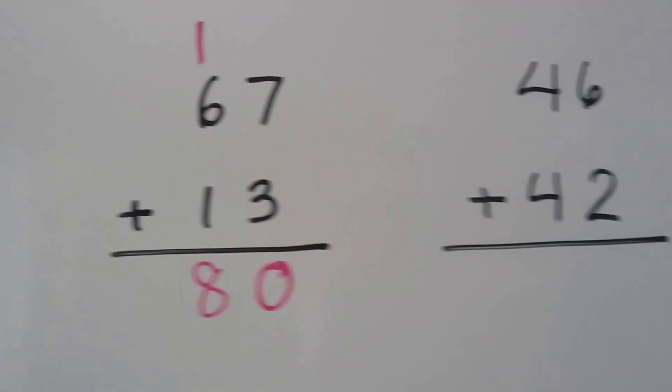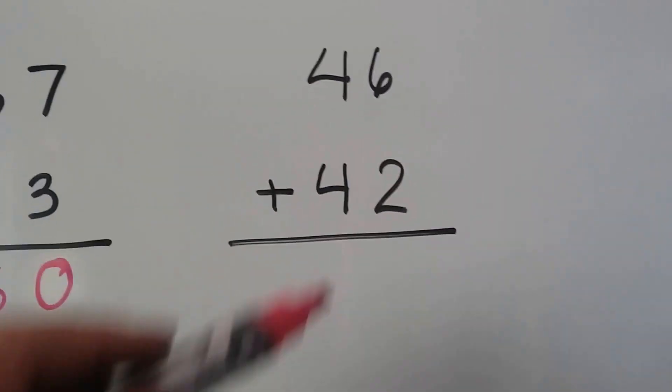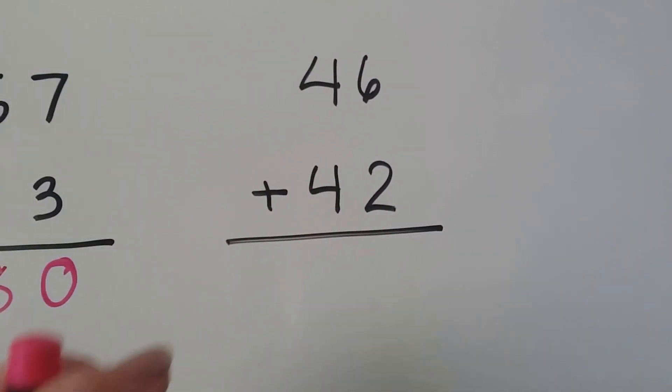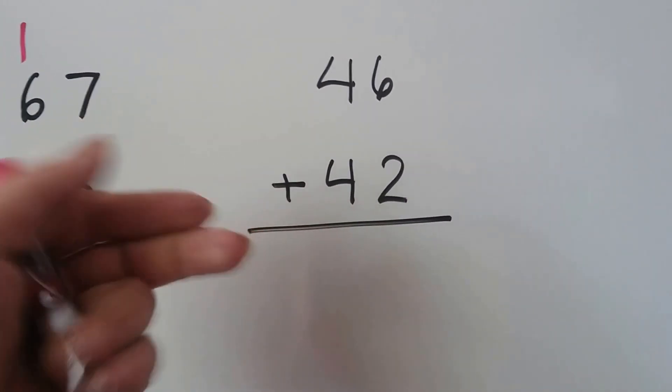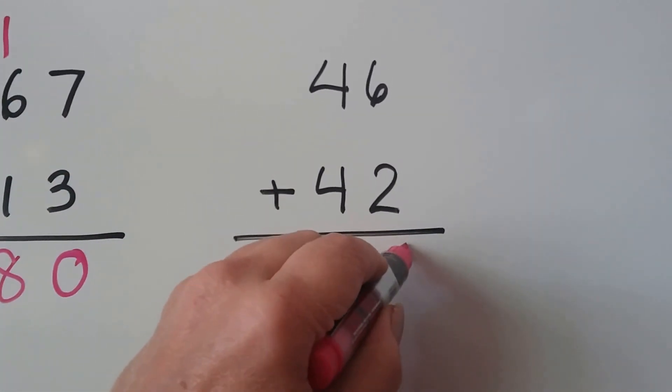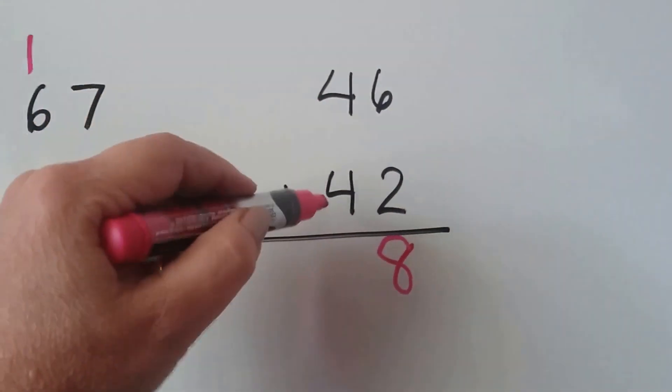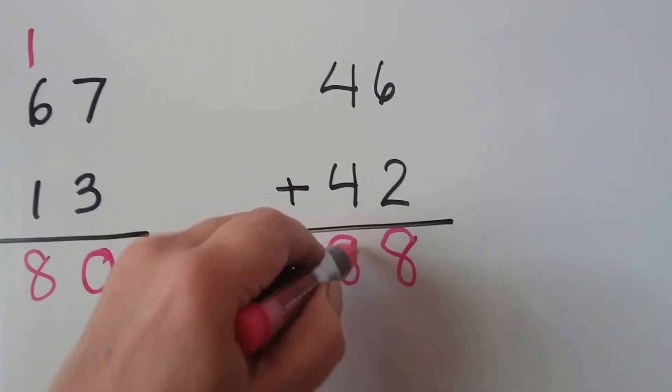We're going to do it again. We start with the ones place. We start with the larger number 6 and count on: 6, 7, 8. This is an 8. We didn't need to regroup, did we? We add the tens place. 4 plus 4 is 8. That's 88.